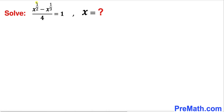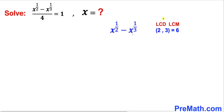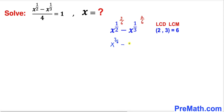Let's get started with the solution. The first thing we are going to do is focus on the numerator part and manipulate it. Let's scan these exponents and focus on the denominators 2 and 3. The least common denominator, or least common multiple, of 2 and 3 is 6. So we make the denominators the same: 1/2 becomes 3/6, and 1/3 becomes 2/6. Therefore we can write x^(3/6) minus x^(2/6).